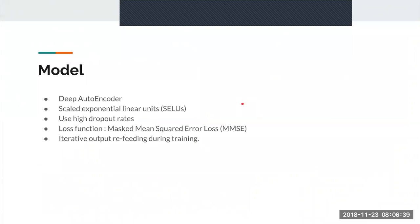The traditional approach uses linear equations with unknown variables, but this paper uses deep learning models to predict these values. The model uses an autoencoder with scale exponential linear units (SELU) as the activation function, similar to leaky ReLU. They use high dropout rates to avoid overfitting, a masked MSE loss function, and a novel approach known as iterative output refeeding during training.